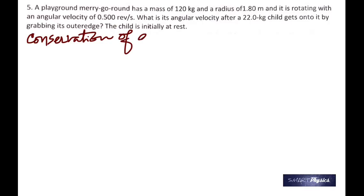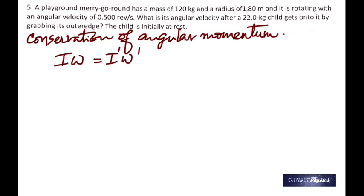According to the conservation of angular momentum, I1 omega 1 is equal to I2 omega 2. That means angular momentum is conserved because I omega is the formula for angular momentum. Well, I'm using I prime, omega prime, same thing. And now what's going to happen is when the child gets on to the merry-go-round, the total moment of inertia of that merry-go-round increases.